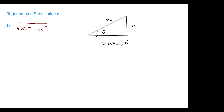This is for when integrands start to get complex. You might think about integration by parts, but that would take real work choosing u and dv. What I'm going to suggest is: if you look at your integrand and you see something like the square root of a² minus u², that's our first example. I've drawn a triangle on the right to show how a trig substitution might facilitate your integral.